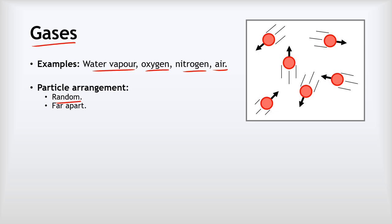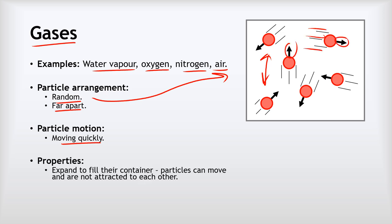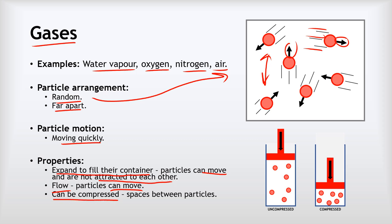Now for gases — for example water vapor, oxygen, nitrogen, and air. The particle arrangement is random again and the particles are spaced far apart with large gaps in between. The particles are moving really quickly, which is why we've got arrows and speed lines representing that fast motion. Gases expand to fill their containers, gases can flow really well, and gases can be compressed — the large spaces between the particles just get reduced to much smaller spaces.